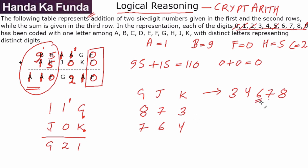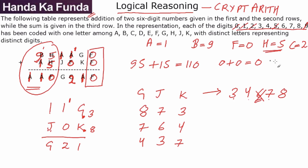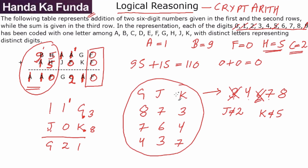Can G be 6? No, G cannot be 6 because then I would need K to be 5, but H is already 5. How about G as 4? Then K will be 7, and J will be 3. Can G be 3? No — if G is 3 and K is 8, that part fits, but J would have to be 2, and C is already 2. So G cannot be 3, and G cannot be 6.